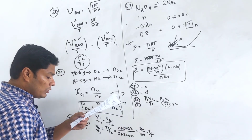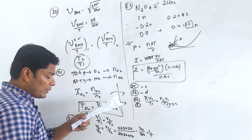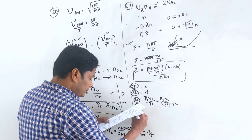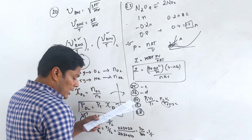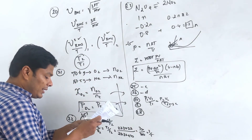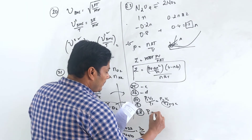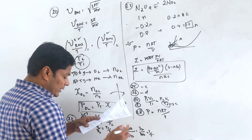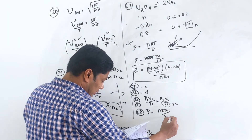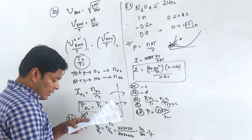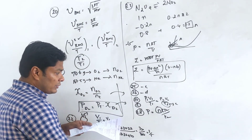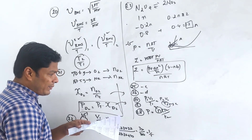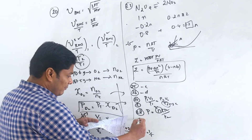Question 28: 2 moles of ideal gas at 546 K occupies 44.8 L. Find the pressure. P = nRT/V. With n=2 and the given values, this gives a straightforward answer. Option A.